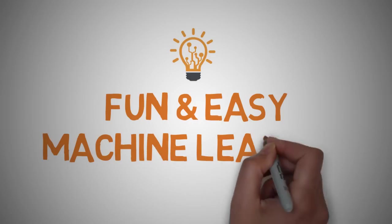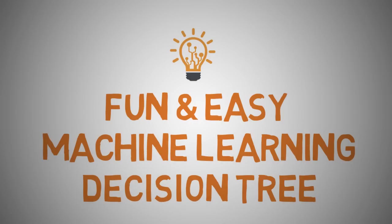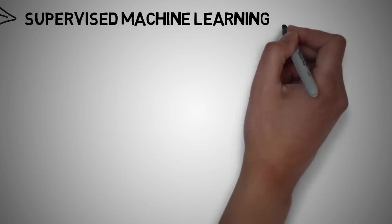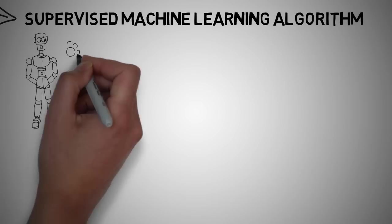Welcome to another fun and easy machine learning tutorial on decision trees. A decision tree is a type of supervised learning algorithm that is mostly used in classification problems.